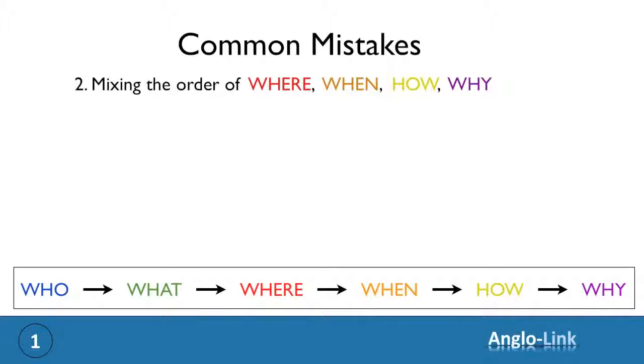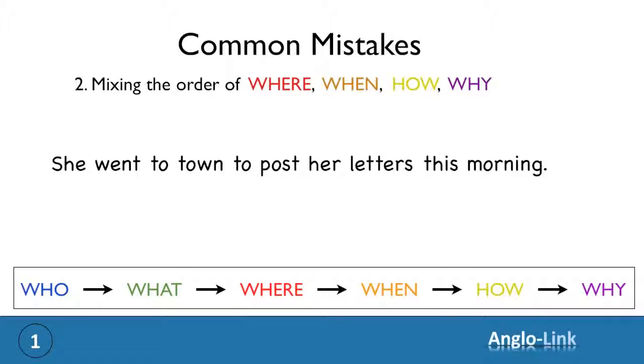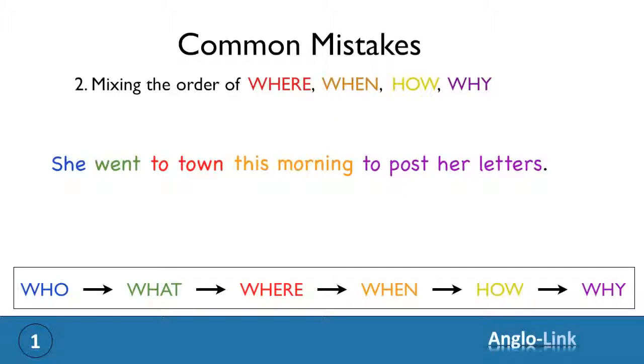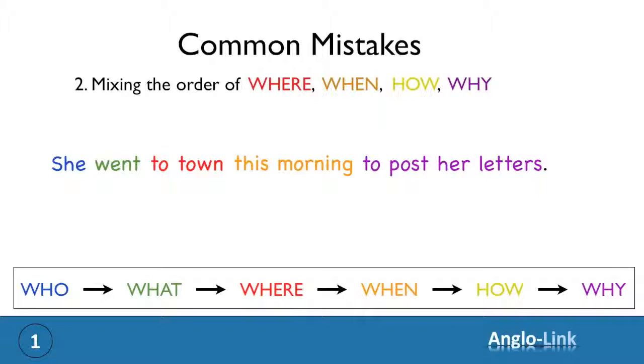And one final example. She went to town to post her letters this morning. What's gone wrong is that the why, once again, has come before the when. Let's put them in the right order. She went to town this morning to post her letters.